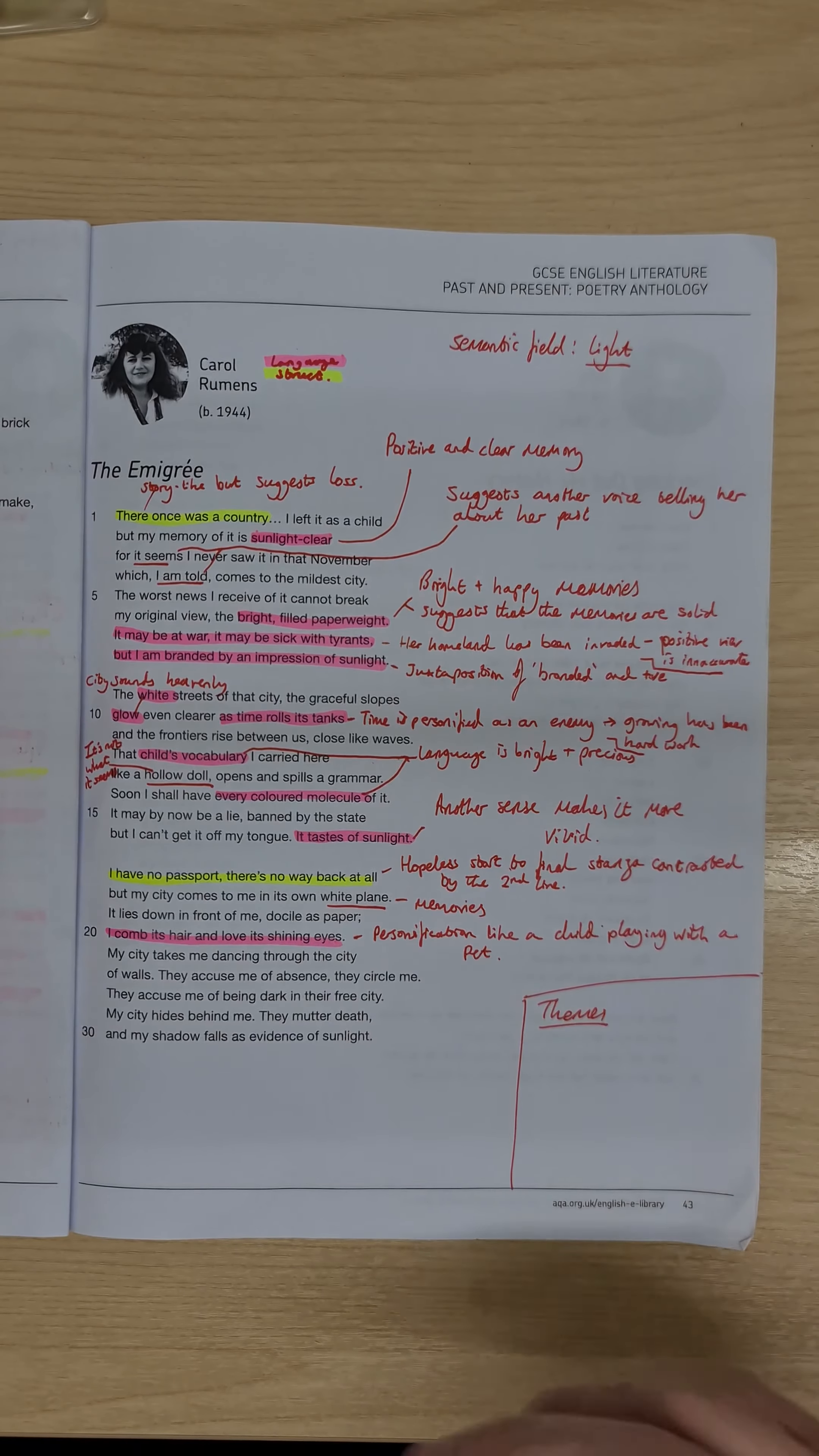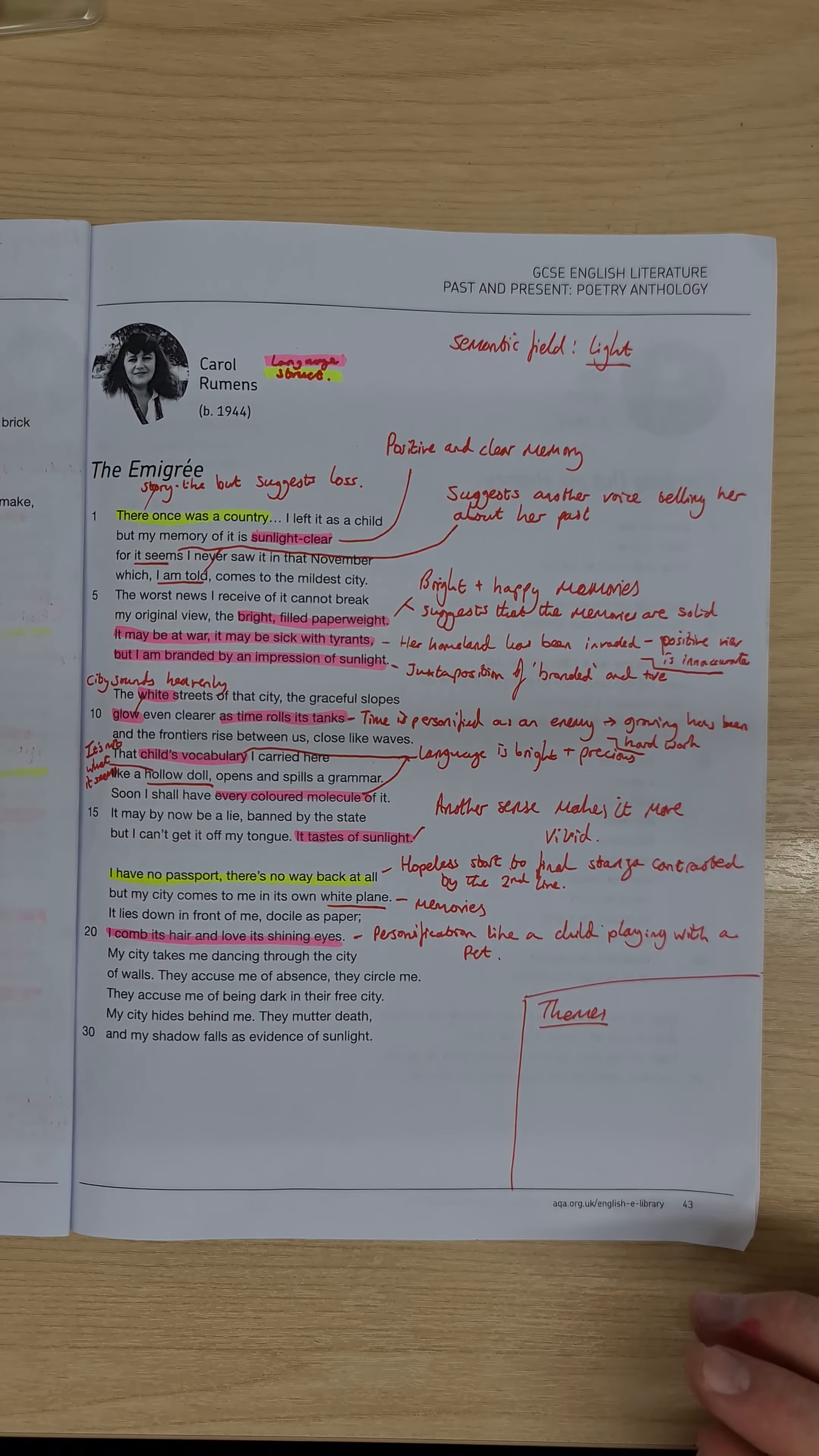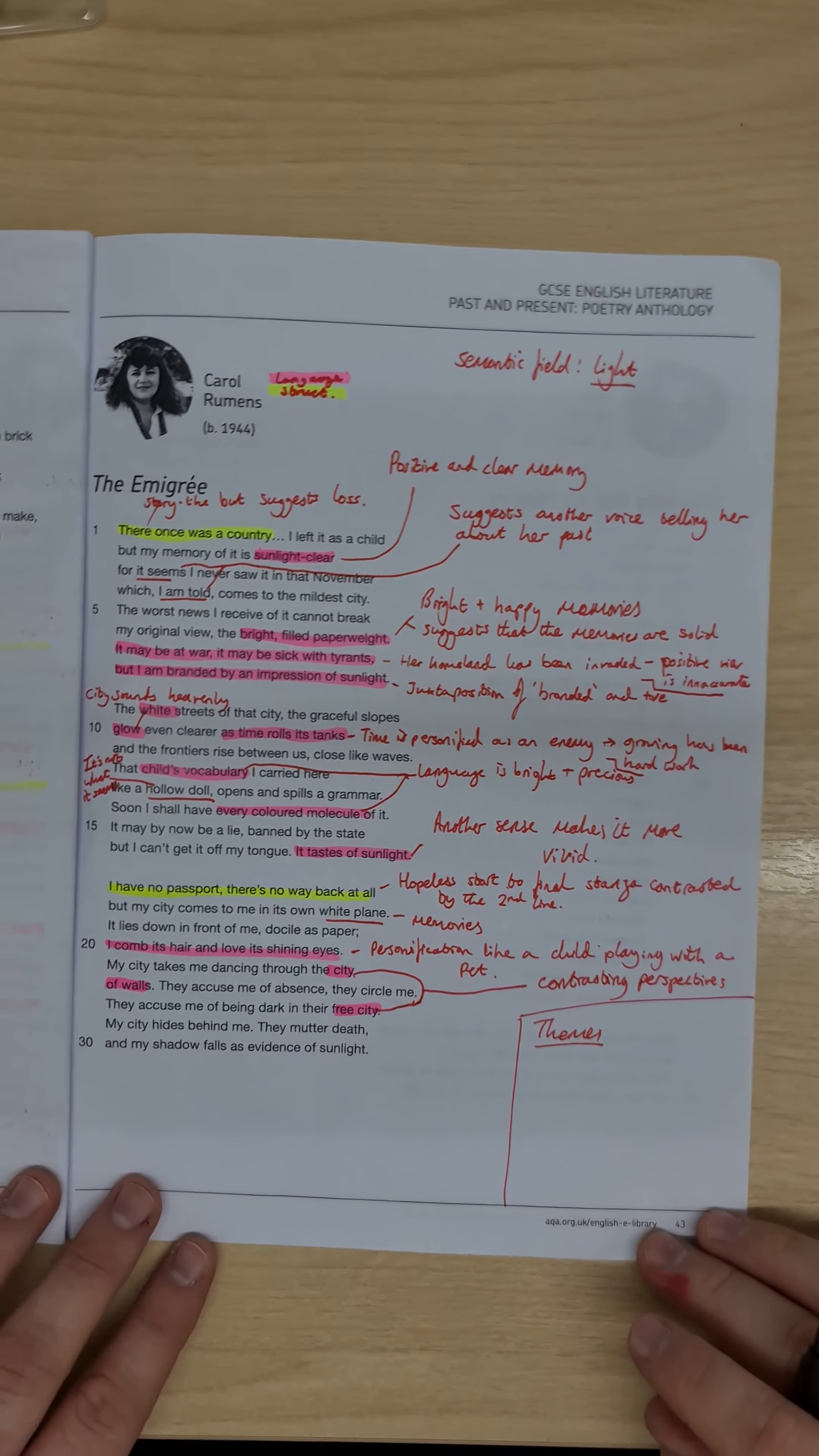looking down to line 21, then my city takes me dancing through the city of walls, and that's a really interesting phrase there, the contrasting perceptions of the city that the speaker is in now, she sees it as restrictive, the city of walls, but there, the people who live there, see it as a free city, so we have this contrasting perspective, city of walls, and then free city, and because we've got these contrasting perspectives, it suggests again that she doesn't fit in, or she doesn't feel like she fits in, at the very least,